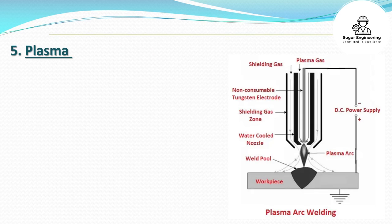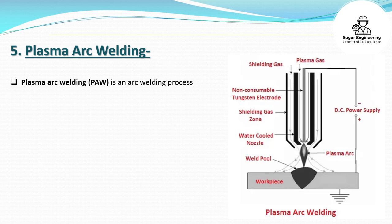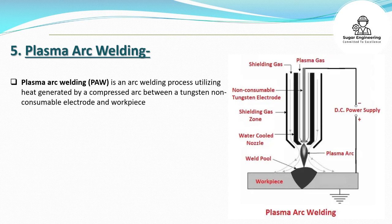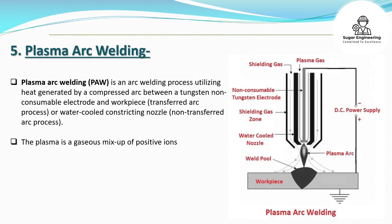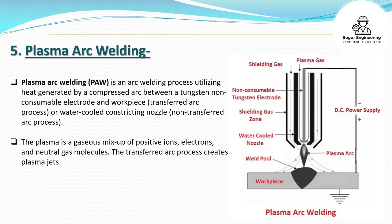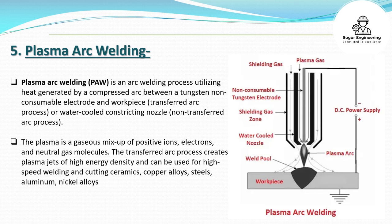5. Plasma Arc Welding (PAW) is an arc welding process utilizing heat generated by a compressed arc between a tungsten non-consumable electrode and workpiece (transferred arc process) or a water-cooled constricting nozzle (non-transferred arc process). The plasma is a gaseous mixture of positive ions, electrons, and neutral gas molecules. The transferred arc process creates plasma jets of high energy density and can be used for high-speed welding and cutting of ceramics, copper alloys, steels, aluminum, nickel alloys, and titanium alloys.